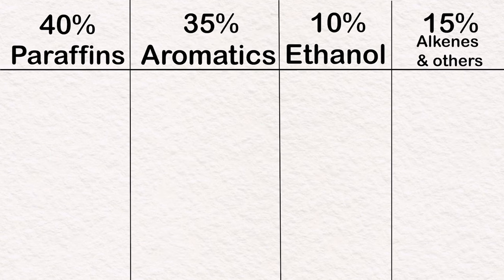In general, the main components in gasoline are 40% paraffins, 35% aromatics, 10% ethanol, and 15% alkenes and others.